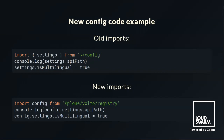Here is a code example. The old way of importing configuration required importing settings from tilde config to set isMultilingual to true. The new way requires importing config from @plone/volto/registry and then prefixing settings.isMultilingual with config.